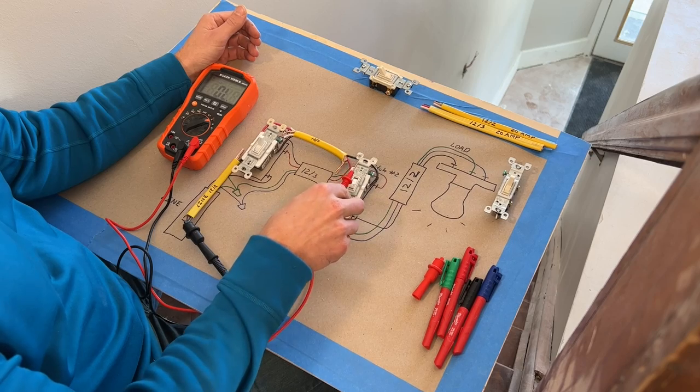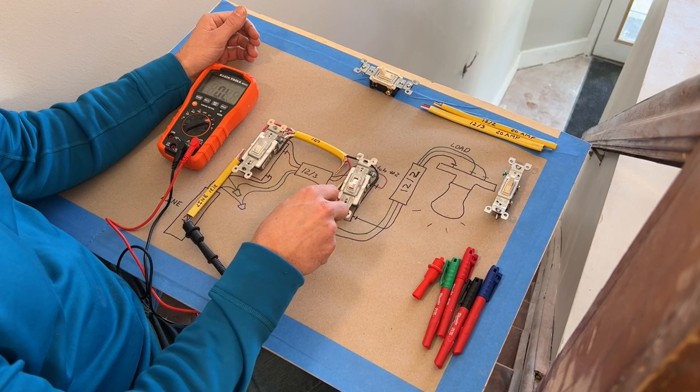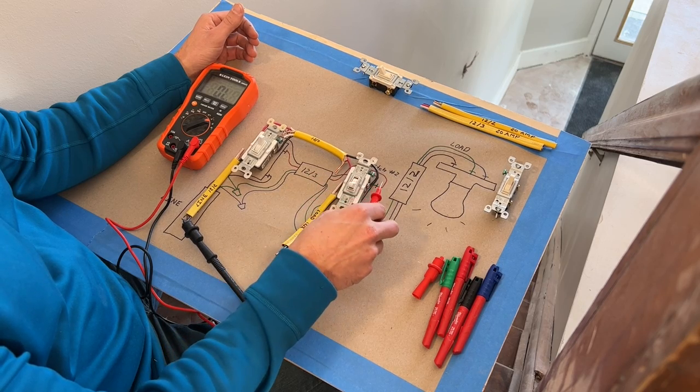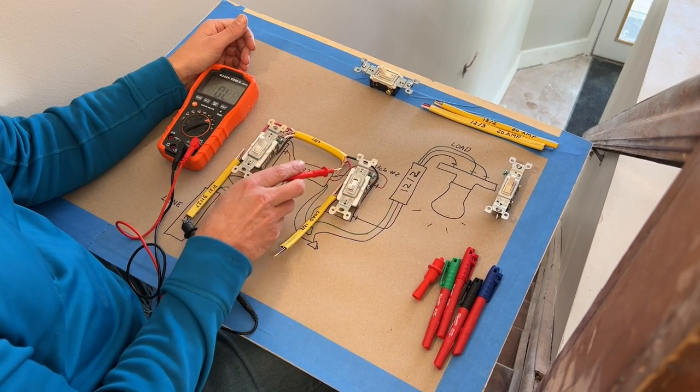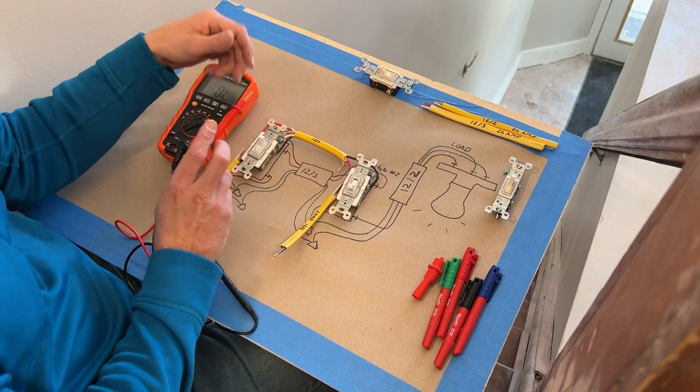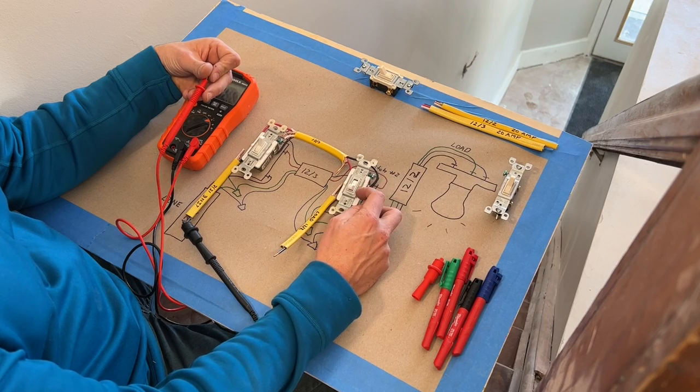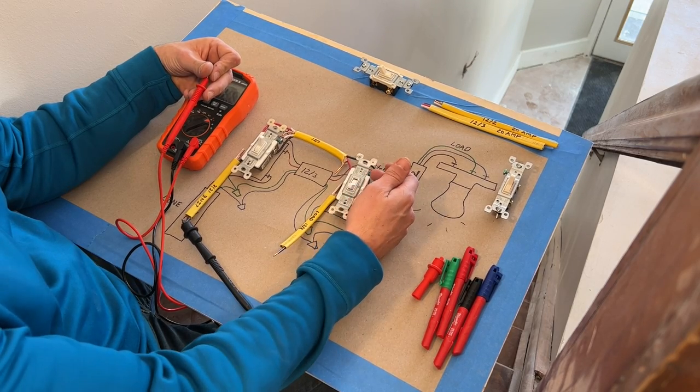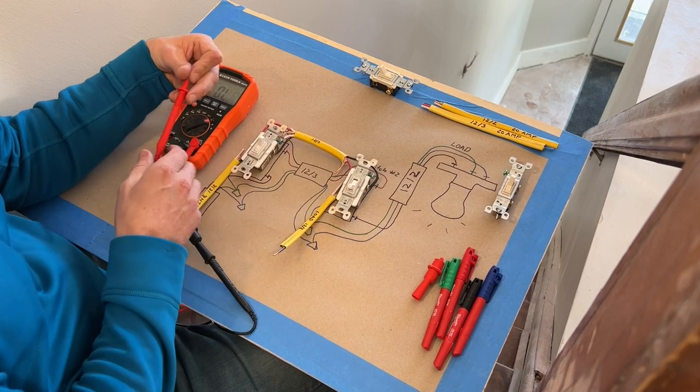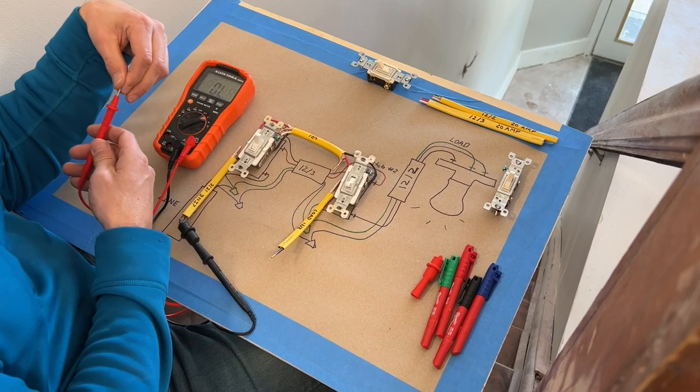So really, these switches are just flipping between connecting this black terminal to this gold terminal, or if you flip it the other way, it connects it to this gold terminal. So the travelers are critical to give you that connection between the two different light switches and the functionality where you're only using one light switch to turn on and off, or you turn it on at one light switch and off at the other. That's what the travelers are used for, and that's why they're critical to the correct functionality of a three-way light switch.